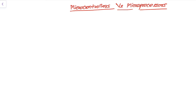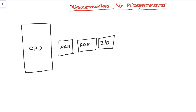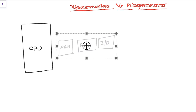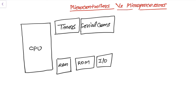Let's first understand what a general purpose microprocessor system is. In a microprocessor system we have a CPU, also known as the microprocessor. Then we have external RAM, external ROM, external input and output ports, timers, and serial communication along with every other peripheral.